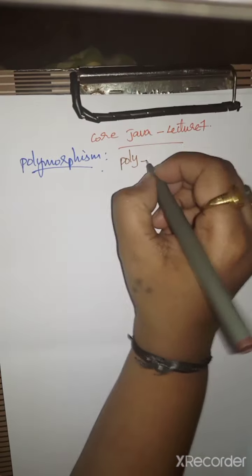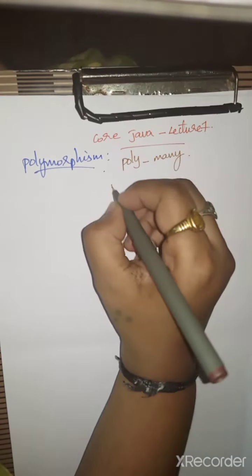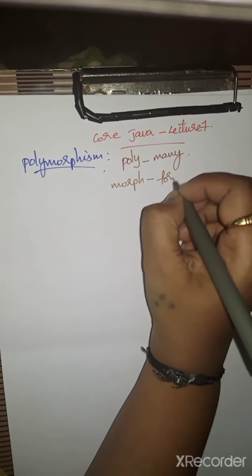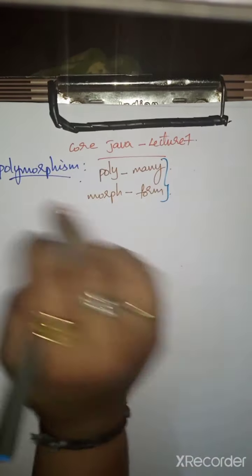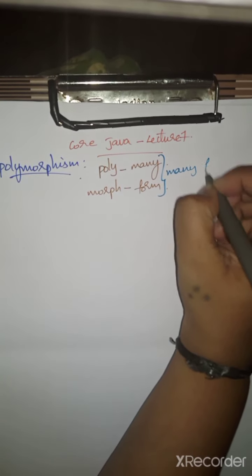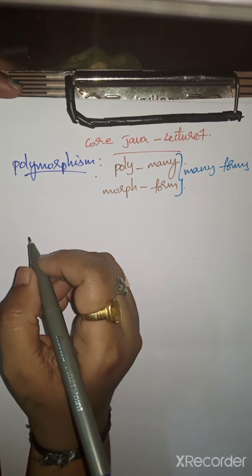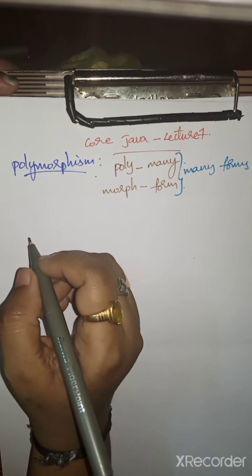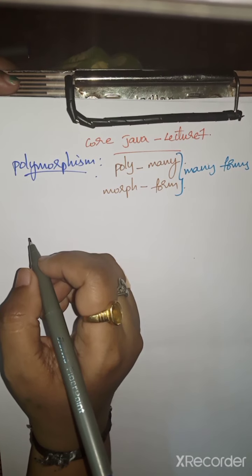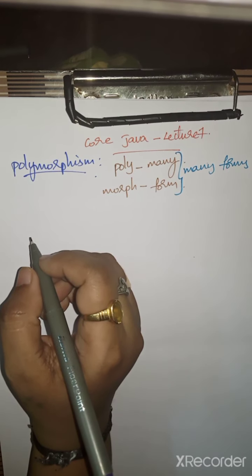In Greek, poly means many, morph means form. Together it's called polymorphism, which stands for many forms. Polymorphism is a feature that allows one interface to be used for a general class of actions. The specification is determined by the exact nature of the situation.